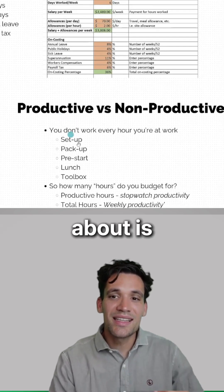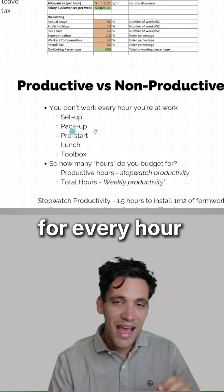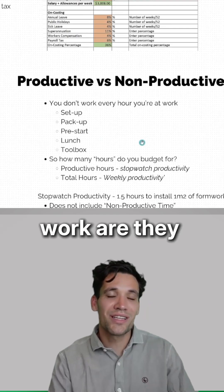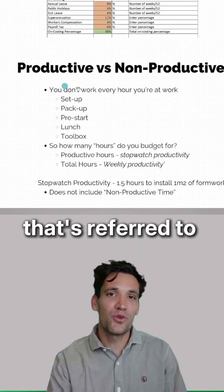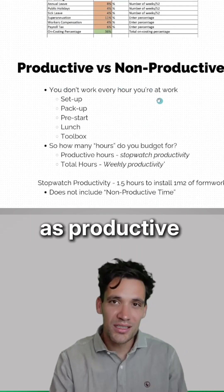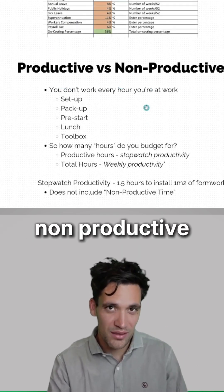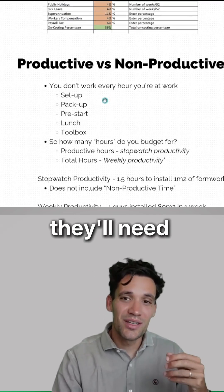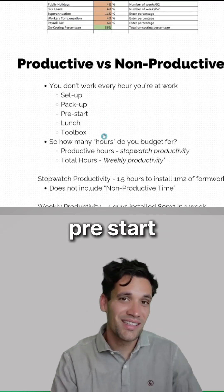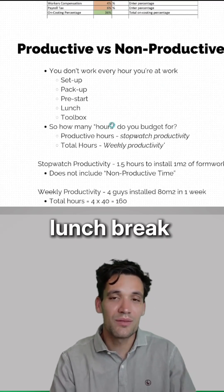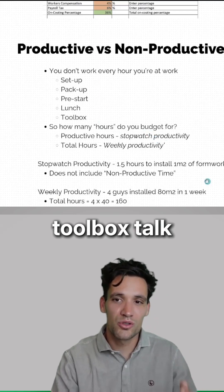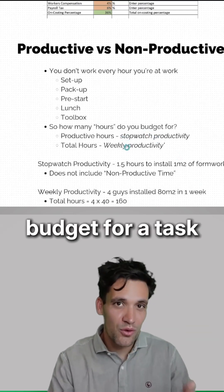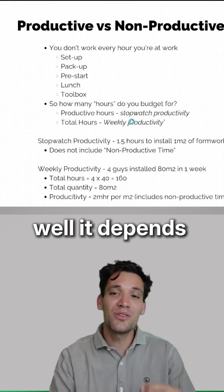The next thing we need to think about is: for every hour they're at work, how much work are they actually getting done? That's referred to as productive versus non-productive time. Every task they do, they'll need to set up, they'll pack up, they'll have pre-start, they'll have lunch breaks and toolbox talks. So really, how many hours do we budget for a task?